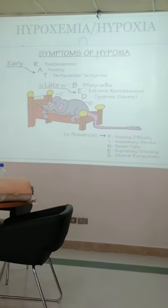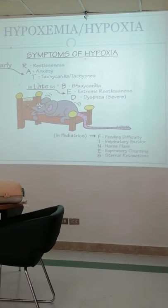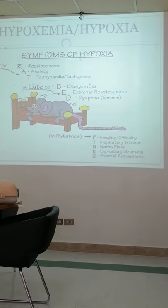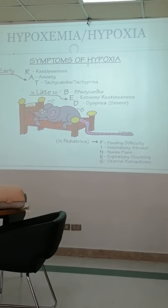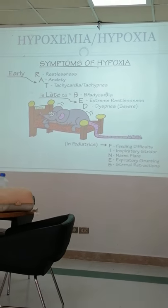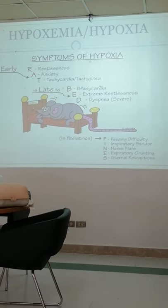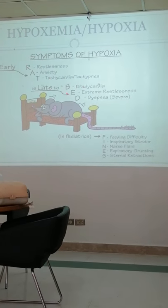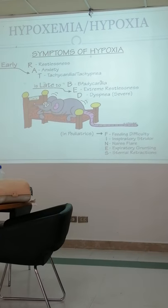Later on, late symptoms: instead of tachycardia, the patient will become bradycardic. Extreme restlessness will increase, and the patient will also develop dyspnea or shortness of breathing. Remember the mnemonics: early RAT is late to BED. RAT stands for Restlessness, Anxiety, Tachycardia, and Tachypnea. Late symptoms are Bradycardia, Extreme restlessness, and Dyspnea.